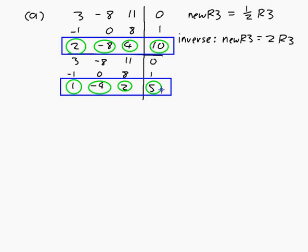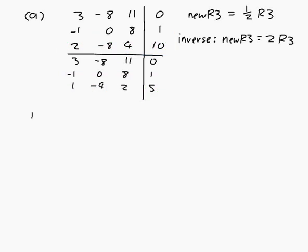Now let's do part B. Again, I want to go from my augmented matrix A, so 3, minus 8, 11, 0, minus 1, 0, 8, 1, 2, minus 8, 4, 10.